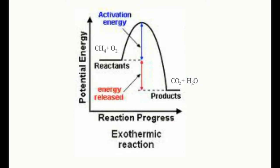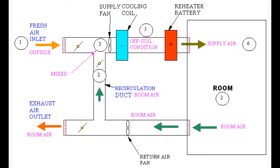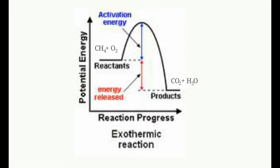An AC unit has a vent at the bottom and one at the top — it sucks out the heat from the bottom and blows in cooler air from the top. That's how AC works. It's the same way your refrigerator and your car work — basically sucking out hot air and replacing it with cooler air.